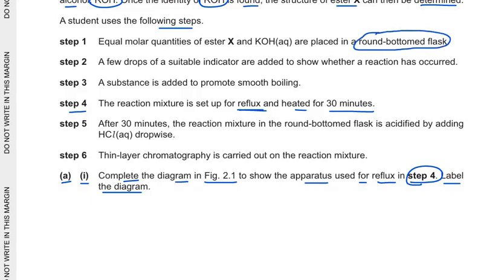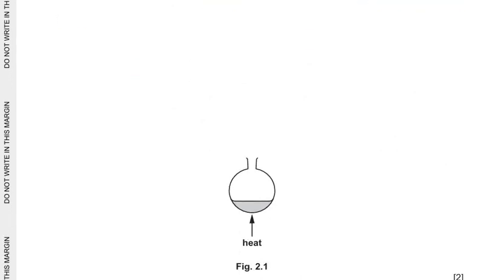Label the diagram. Now what is step 4? The reaction mixture is set up for reflux and heated for 30 minutes. Now what is reflux? The round bottom flask is given here. The reflux is where a condenser is set upright straight where it is also connected with the water. So here we are drawing an upright condenser. My drawing might, you might find a little weird but it's a digital one so you can use pencil and scale and draw it proper.